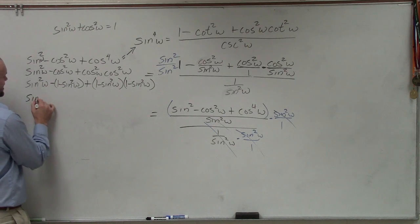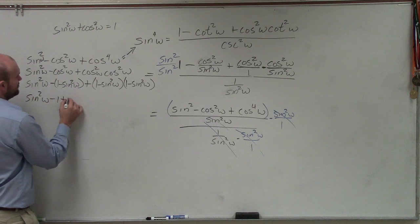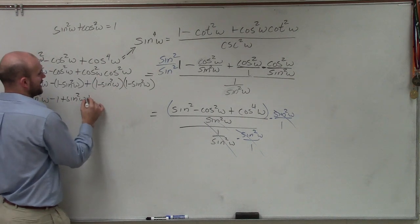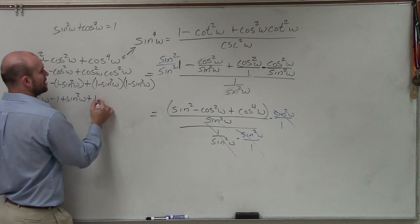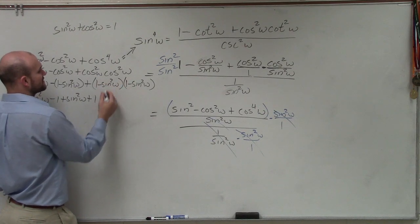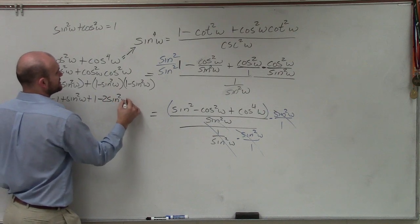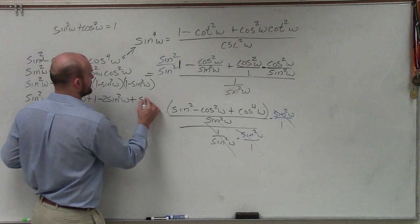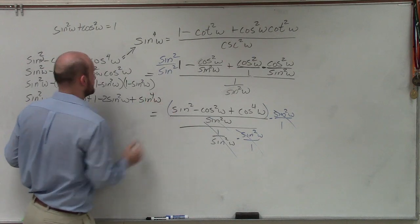Here, I can distribute a property. So I have sine squared of w minus 1 plus sine squared of w. Here, by applying FOIL, I'm going to have 1 times 1 is 1 squared. 1 times negative sine squared plus 1 times negative sine squared is going to be a negative 2 sine squared of w. And then negative sine squared times negative sine squared is going to be a positive sine to the fourth w.